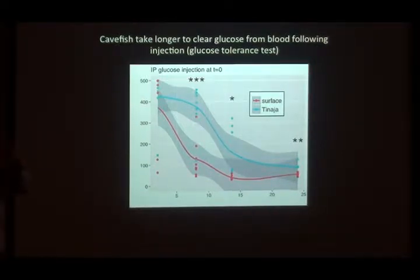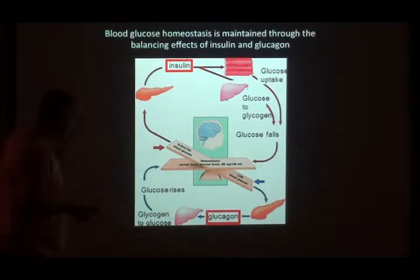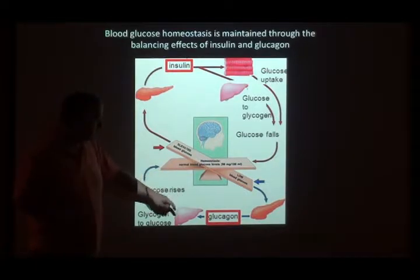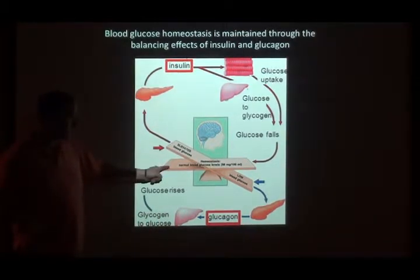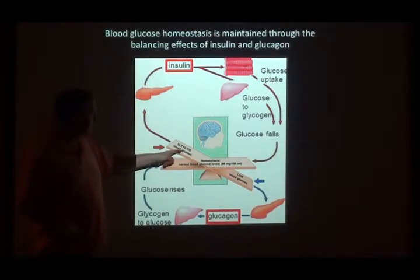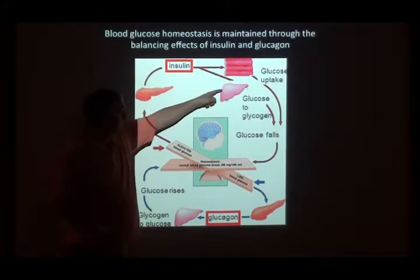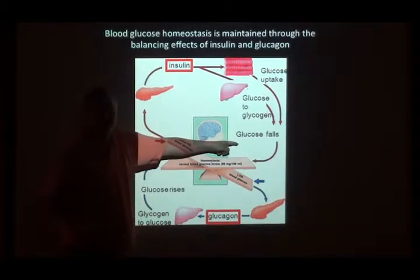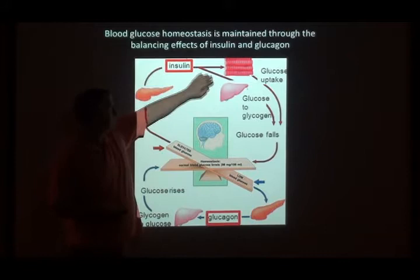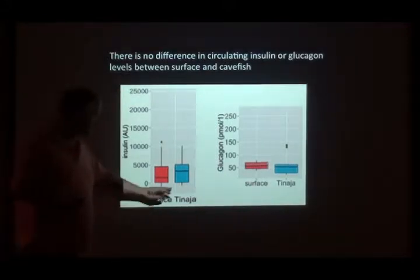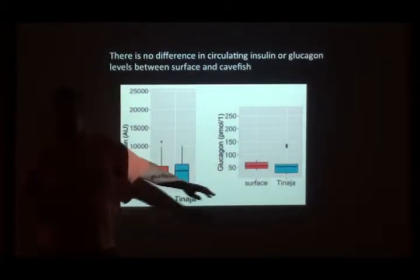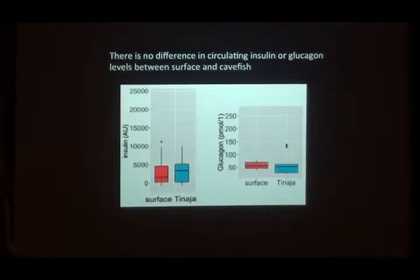This is not diabetes — diabetes is a disease, and these are perfectly normal fish that have evolved to live this way. So what's the evolutionary change taking place? There are two hormones: glucagon when fasting and insulin when fed. We measured both and saw no difference — surface fish and cave fish make the same amounts of insulin and glucagon. So it's not the amount of hormone. Is it sensitivity? Type 2 diabetes starts with insulin resistance. Injecting insulin into surface fish drives blood glucose down, but in cave fish it does not go down. They are clearly insulin resistant.